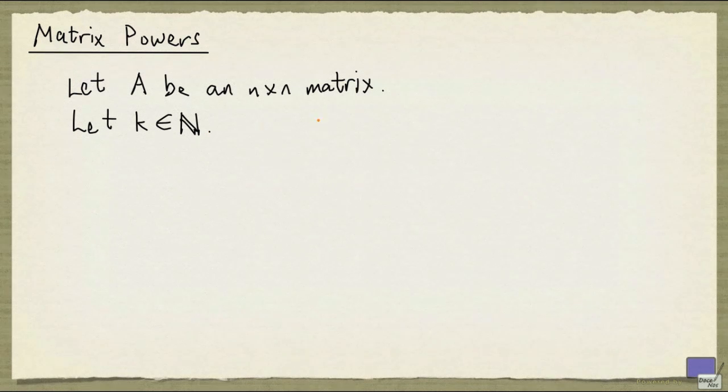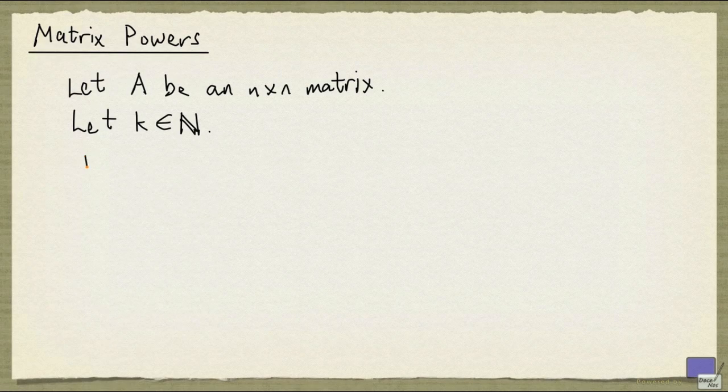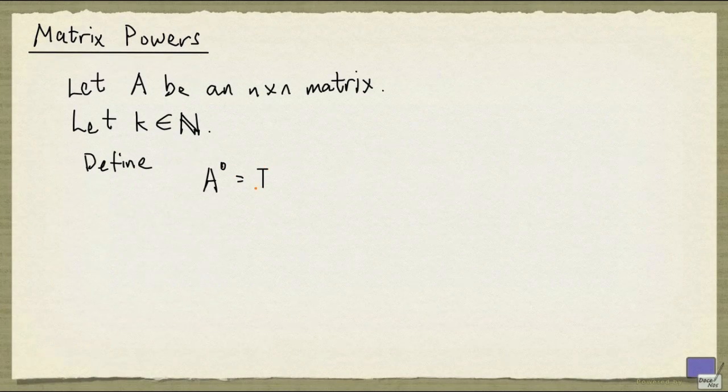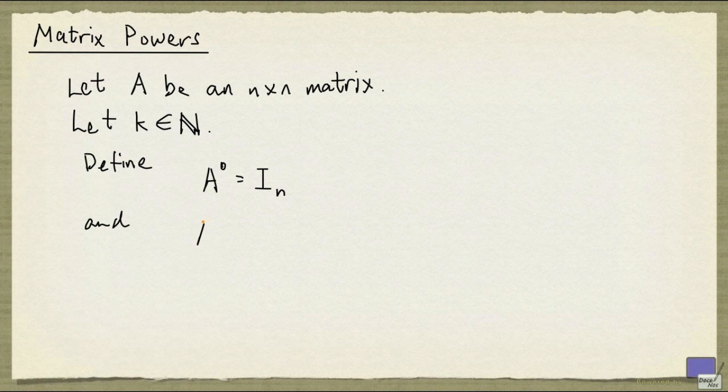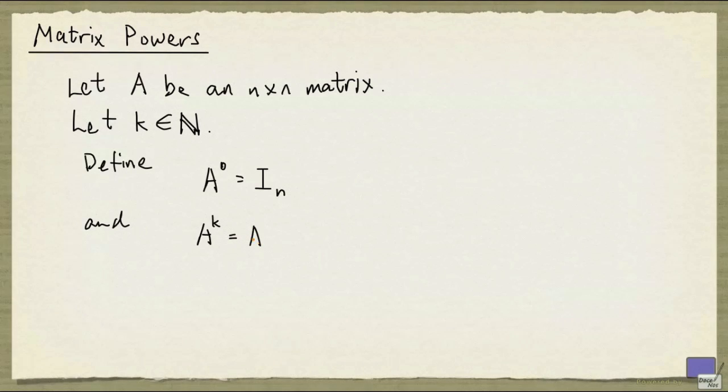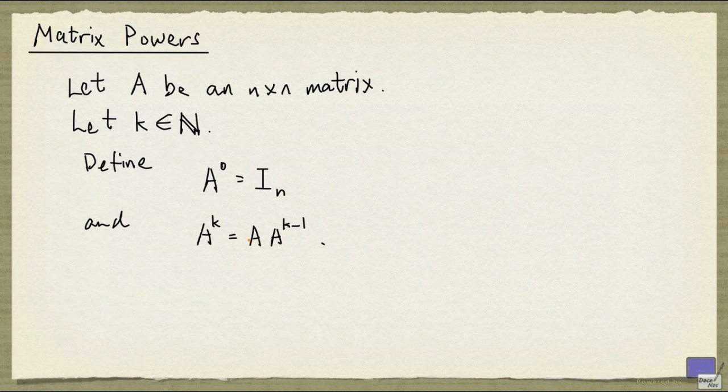So k could be 1, 2, 3, 4, and so on. Now we define A to the power 0 to be the identity matrix, and A to the power k to be A times A to the power k minus 1. So higher powers are defined in terms of a lower power.